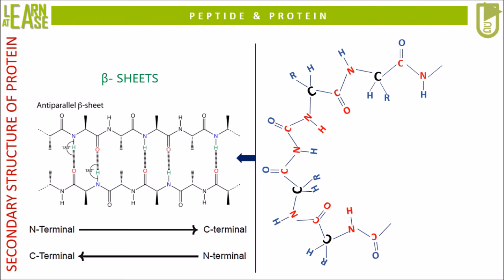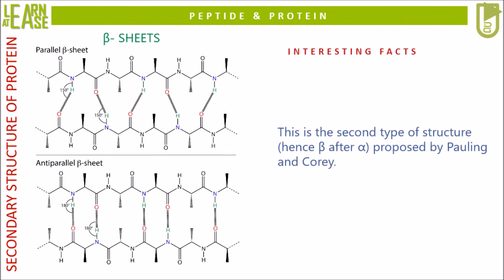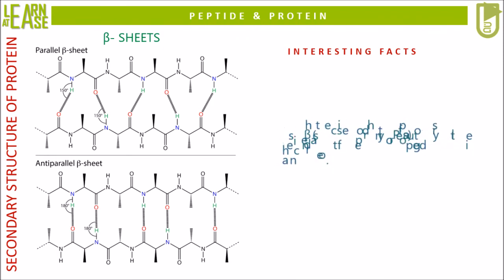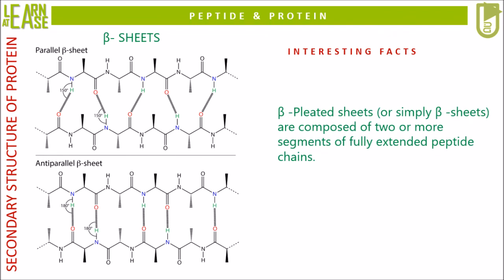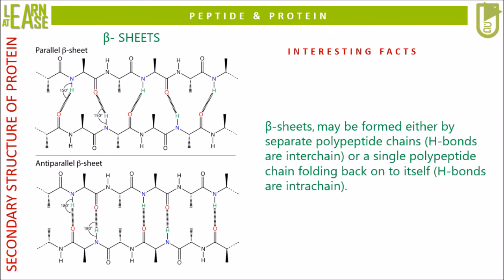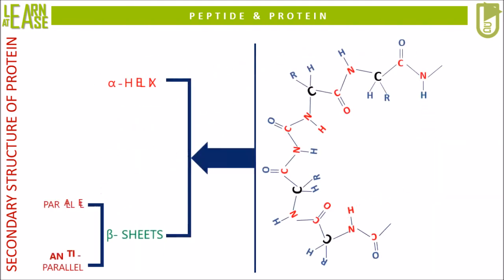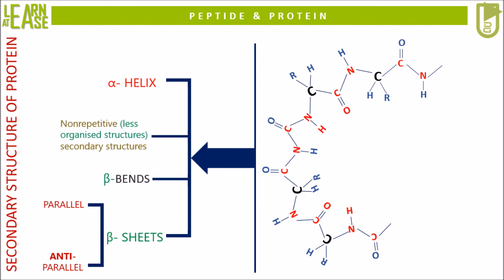Beta sheets are the second type of structure proposed by Pauling and Corey after they proposed alpha helix, hence it is named as beta. Beta sheets are composed of two or more segments of fully extended peptide chains. They may be formed either by separate polypeptide chains or a single polypeptide chain folding back onto itself, and are stabilized by hydrogen bonds. Apart from alpha helix and beta sheets, there occur other types of secondary structures, including beta bends and other non-repetitive, less organized structures also found in proteins.